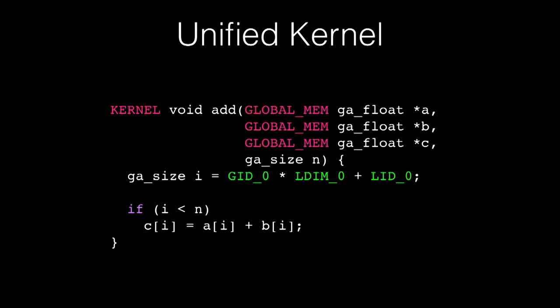One thing that might not be obvious is that what a kernel describes is only a single operation of a vector program. You're basically describing a slice of the computation, and then through the API, you instruct the GPU to run that many, many times to actually affect the whole vector. For the rest of the presentation, I'll use a unified notation, which is an abstraction layer over CUDA and OpenCL, so we can program the kernels once and have them run on both.